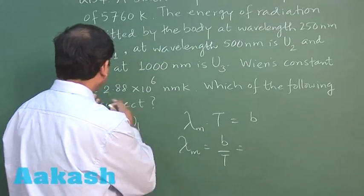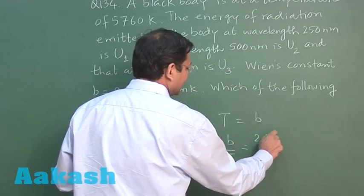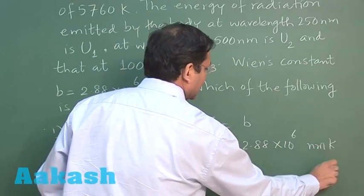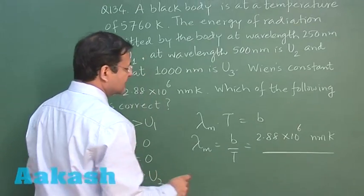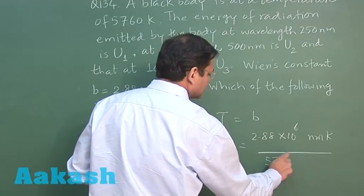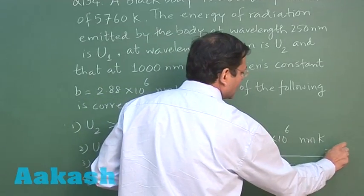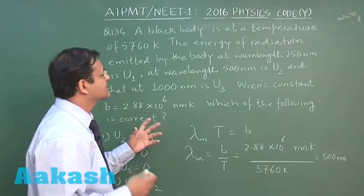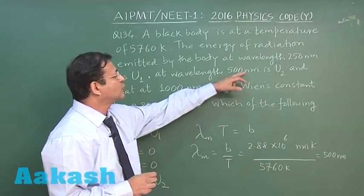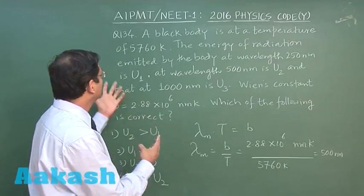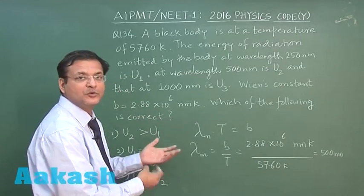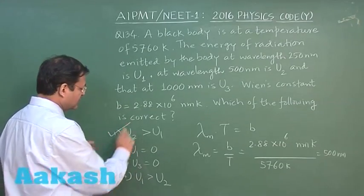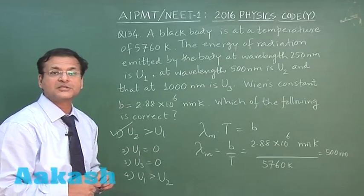Wien's constant b = 2.88 × 10⁶ nm·K and T = 5760 K, so λm = b/T = 500 nm. This means the radiation energy is maximum at 500 nm, so u2 is maximum — greater than both u1 and u3. The correct option for question 134 is option 1.